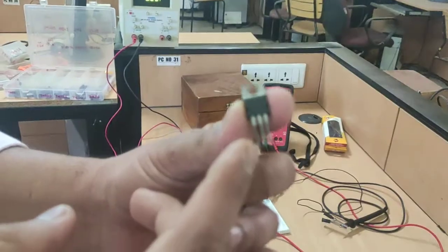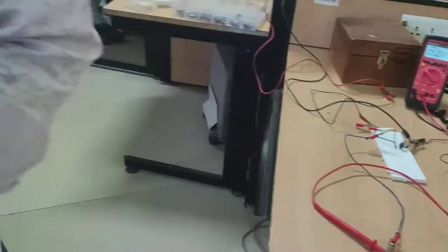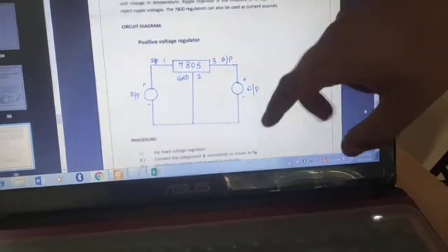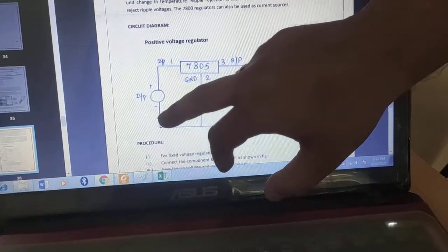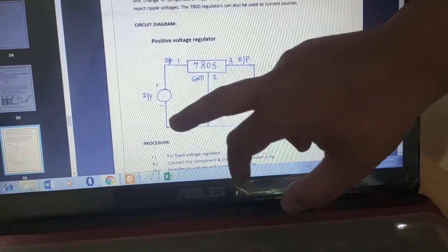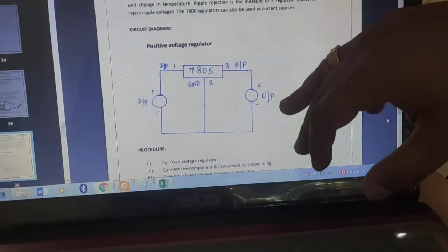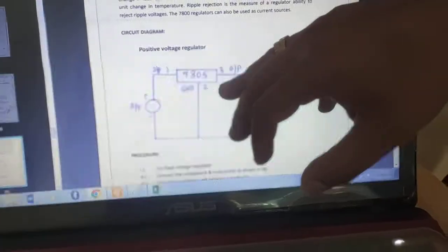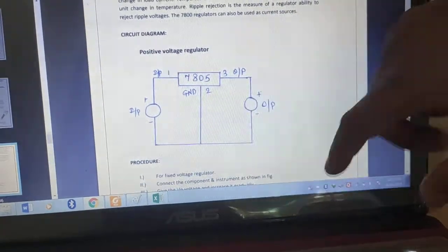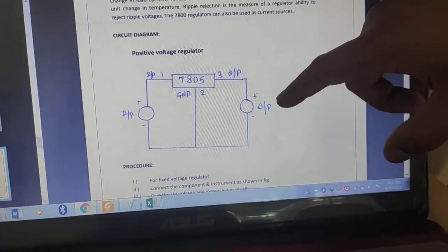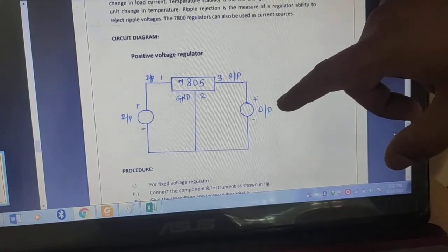So the basic connection of this IC are shown like this. So 7805 input side can be connected to any input voltage above 5 volt because the output expected is 5 volt. So whatever voltage we connect between input and ground, at output side we will get 5 volt, constant 5 volt output.